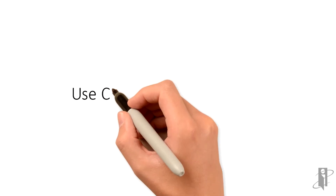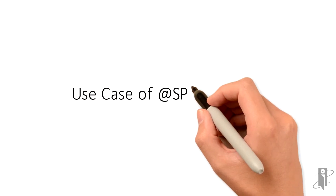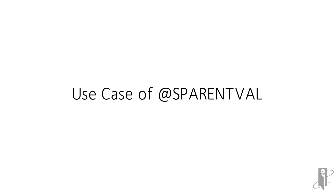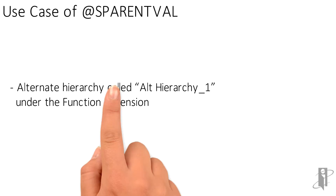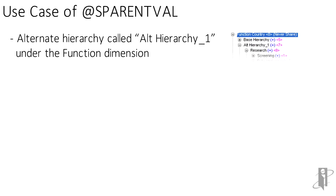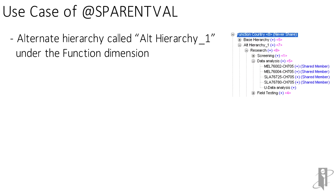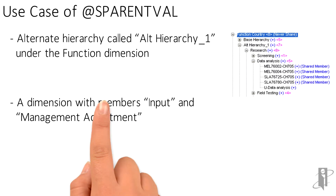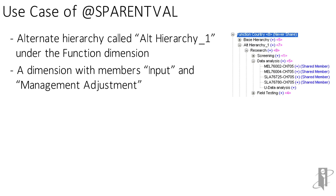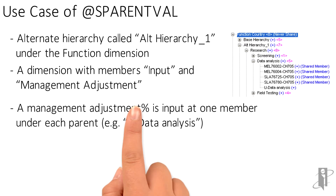In this use case, I will show you a calculation for management adjustment based on the alternate hierarchy. Here you will see the alternate hierarchy called OutHierarchy_1 under the function dimension. Under a separate dimension, you have two members: Input and Management Adjustment.